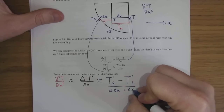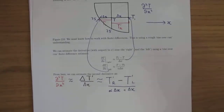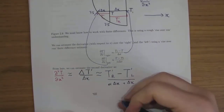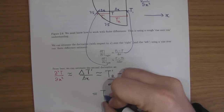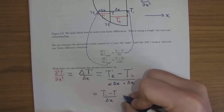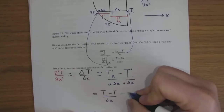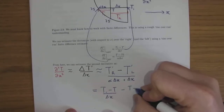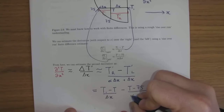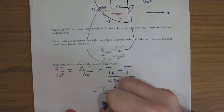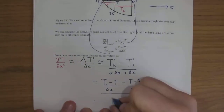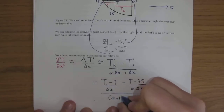Substituting in: the numerator is (T1 minus T) over delta x, minus (T minus 75) over alpha times delta x. The denominator — taking out a common factor of delta x — gives (alpha plus 1) times delta x.